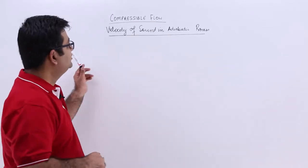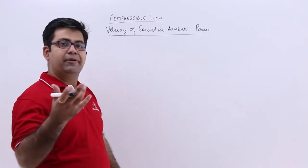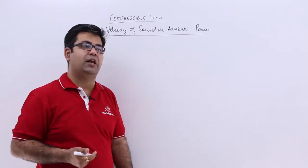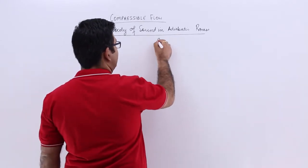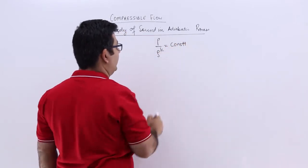Now let us talk about the velocity of sound in adiabatic process. For adiabatic process, the pressure density relationship is given by this formula, where k is the adiabatic index.